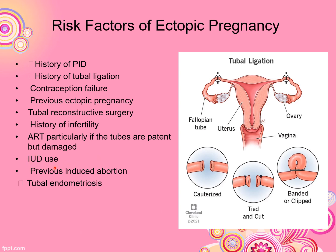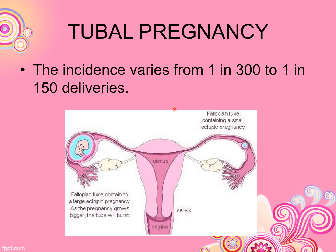IUD — intra-uterine devices — and previous induced abortion are also risk factors. Tubal endometriosis is another risk factor. In endometriosis, tissue from the uterine lining grows outside, affecting the tubes. If you have tubal endometriosis, it increases the chance of implantation in the tube.